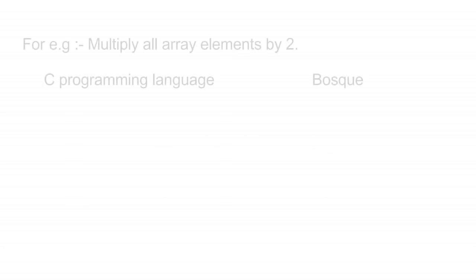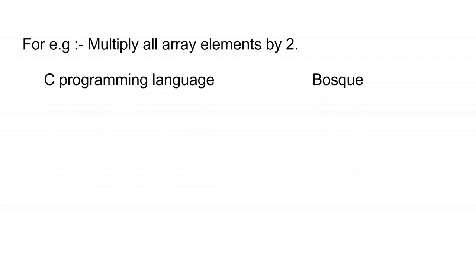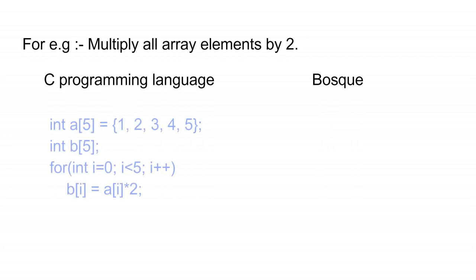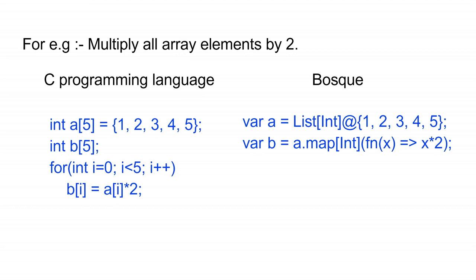For example, multiplying all array elements by two — in C programming, we take two arrays A and B, take five elements in A, and by using a for loop we multiply the whole array A by two.